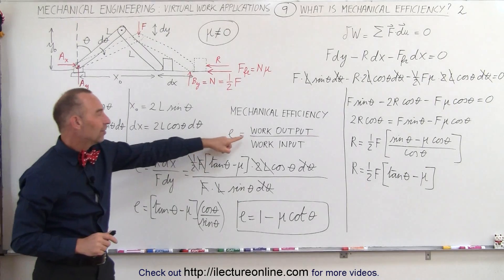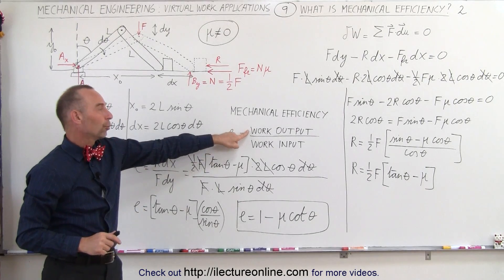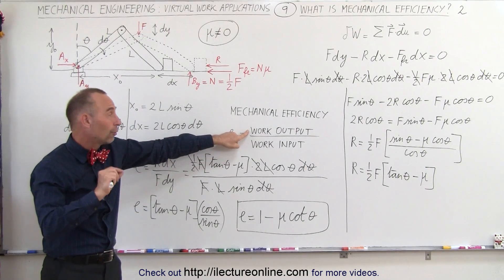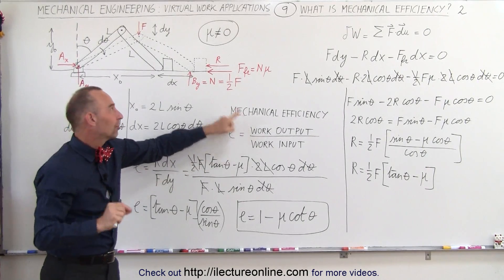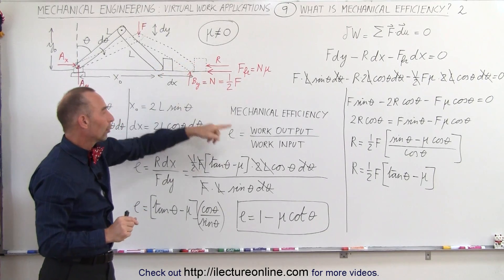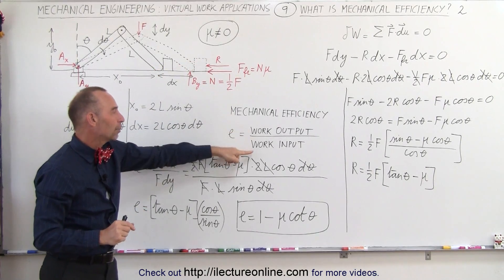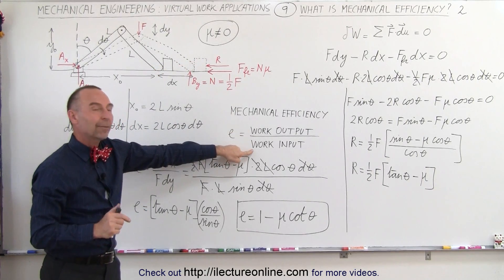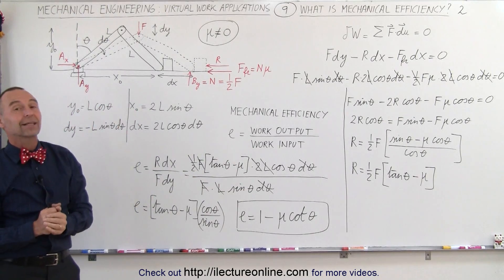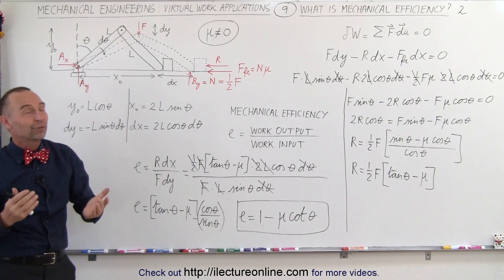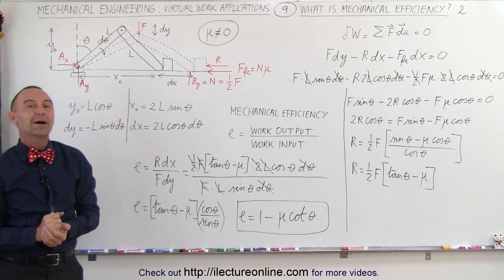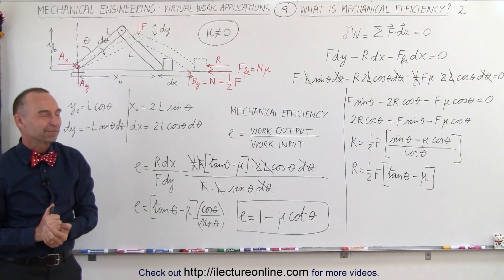Mechanical efficiency is the useful work output — not the work to overcome friction, but the work to actually do real physical work — divided by the work input. This is how we calculate it, and hopefully this clears up what we mean by mechanical efficiency.